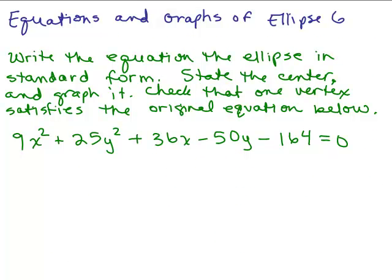This is part six of equations and graphs of ellipses. We're going to write the equation of the ellipse below in standard form. It's given in general form. We're going to state the center and graph it. Then we'll check that one of the vertices satisfies the original equation below. That's a very important point to check.